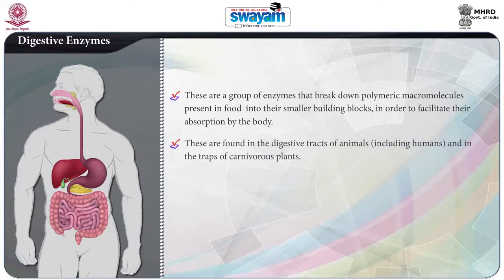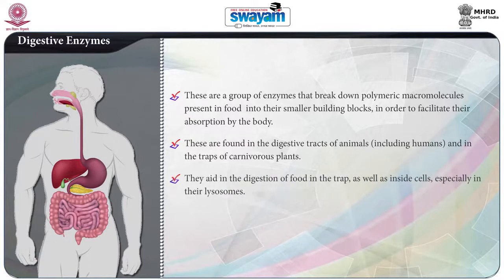Digestive enzymes are found in the digestive tract of animals including human beings, and in the traps of carnivorous plants which trap insects and digest them. They aid in the digestion of food trapped inside, and similarly they help in digestion of food inside the cells, especially in the lysosomes.